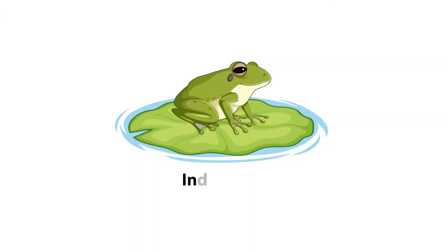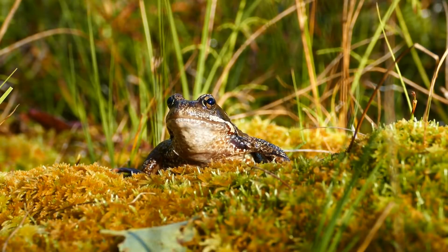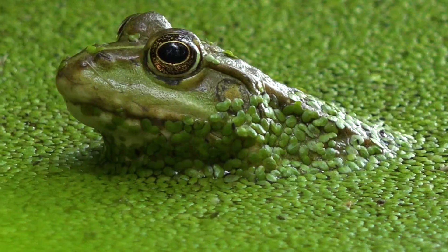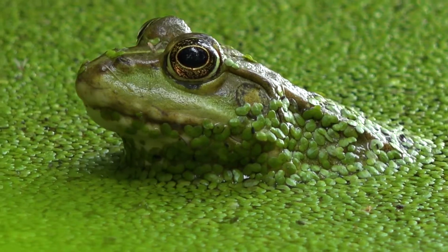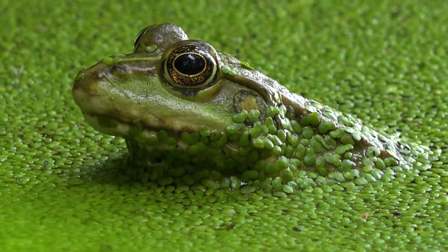First, we have the individual, like a single frog. This level focuses on the characteristics and behaviours of one organism, how it survives and its role in the larger system.